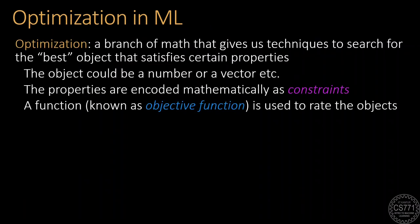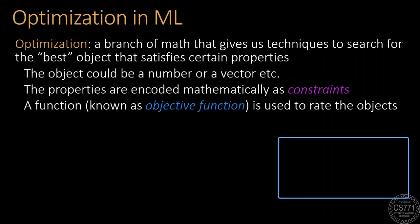Finding this large margin classifier requires us to use tools from the area of optimization. Optimization is a branch of mathematics that deals with algorithms that can find the best object with certain properties. The object could be a vector, a scalar, or a combination of vectors and scalars. In our application, the object we will be searching for are the parameters of a linear model given by a vector w and a scalar b. The properties these objects must satisfy are called constraints, and we have a rating function called the objective function to help us decide the best object.